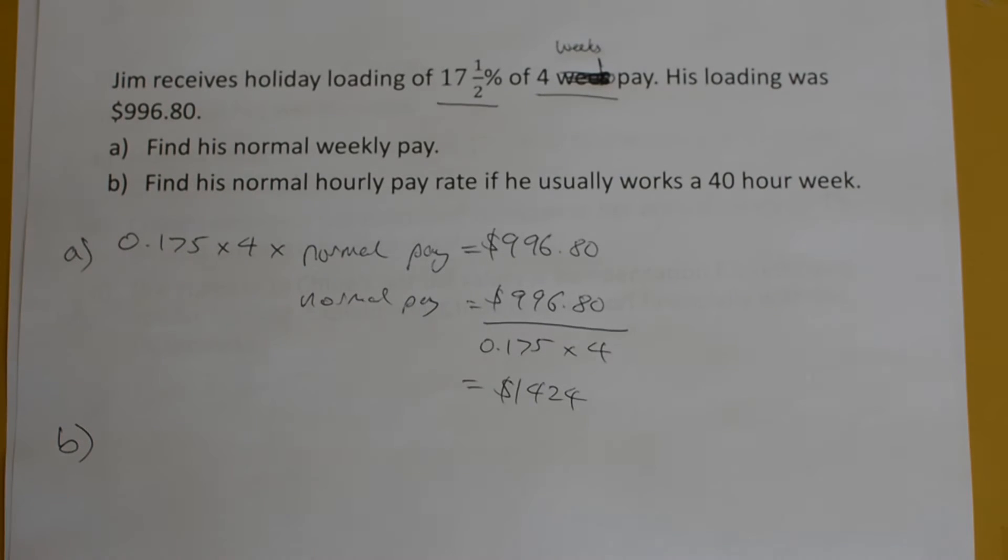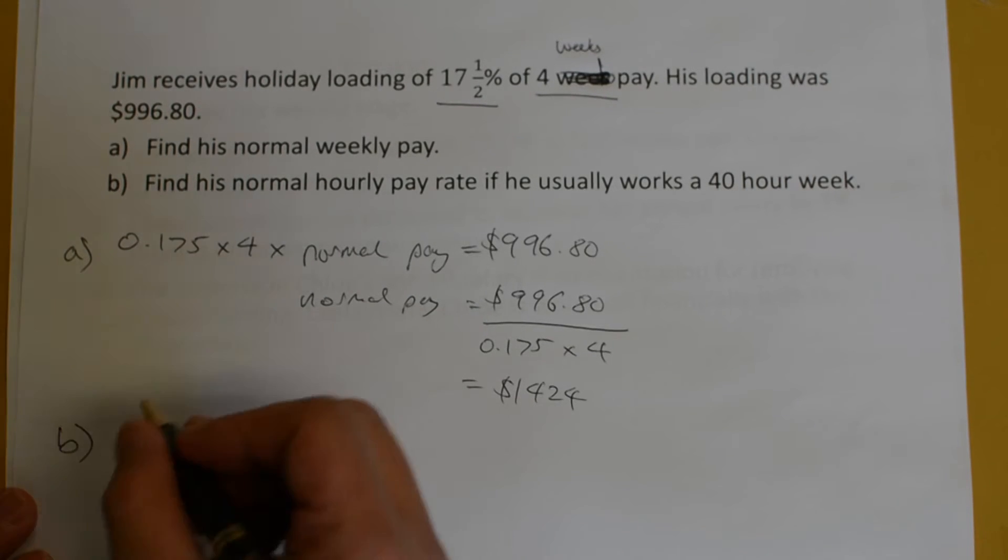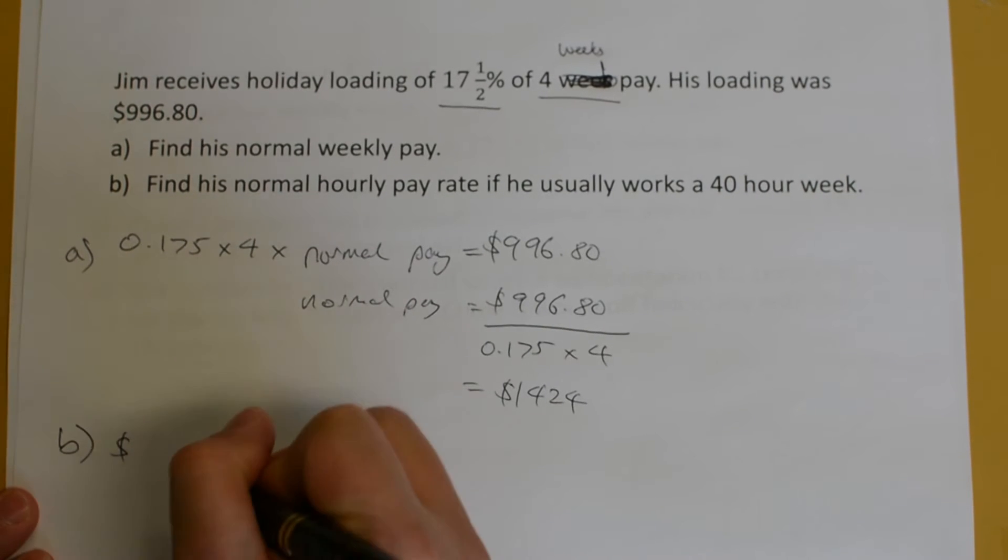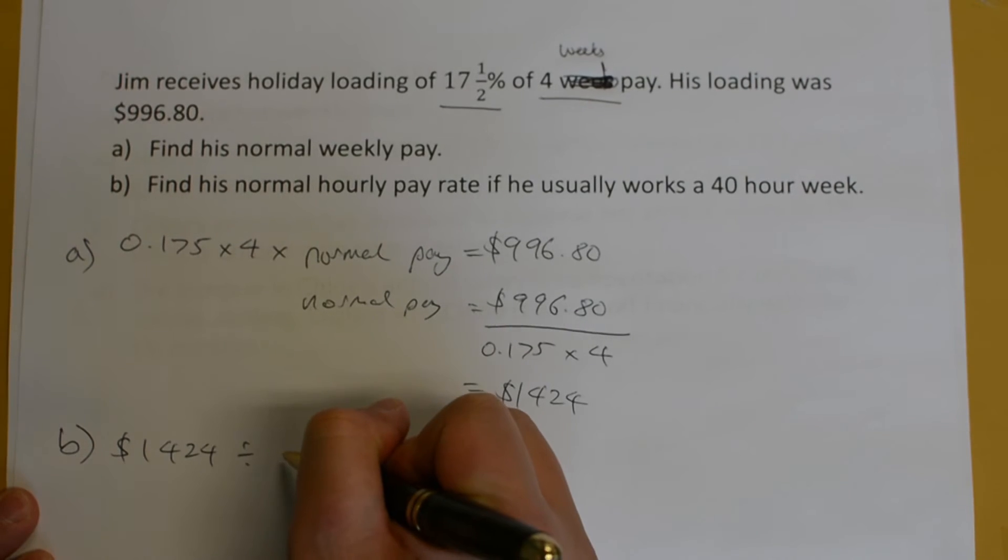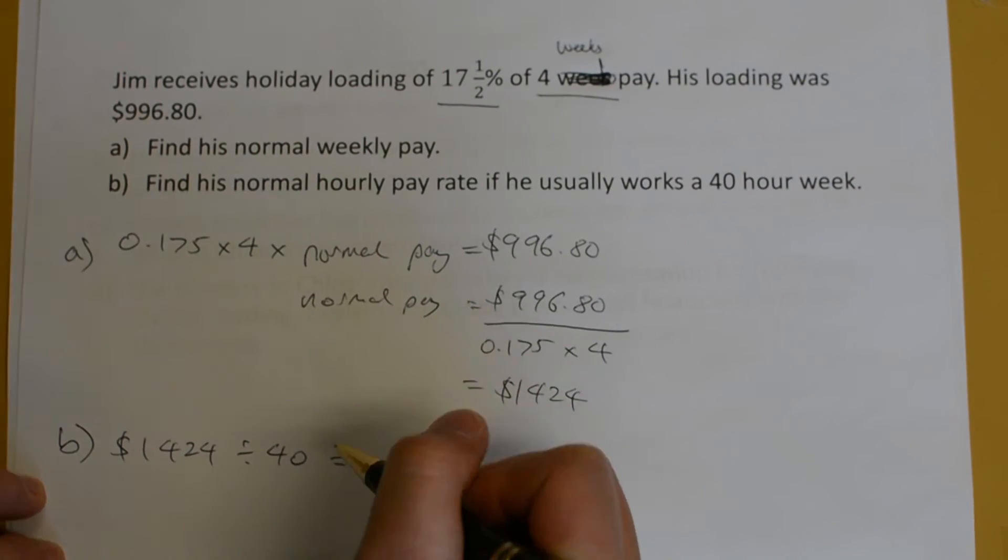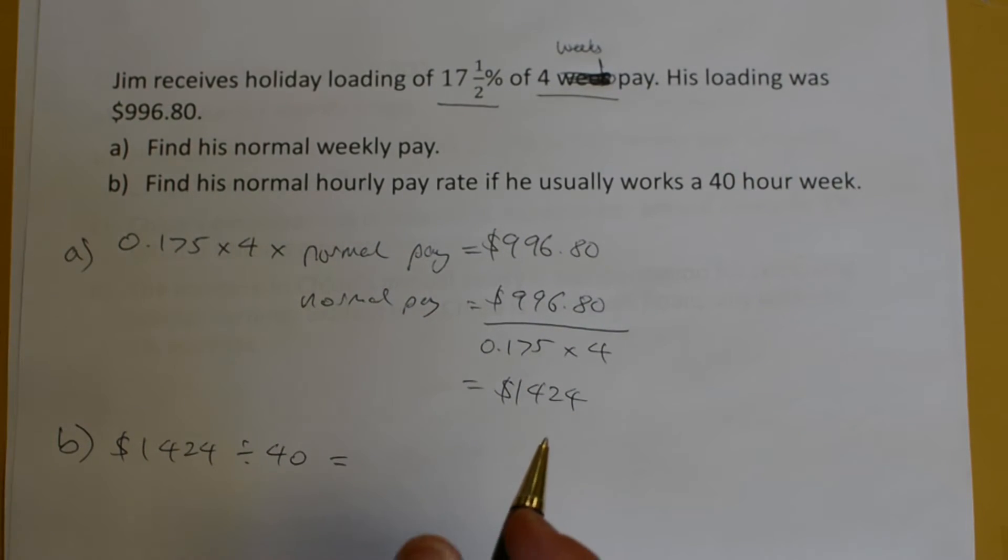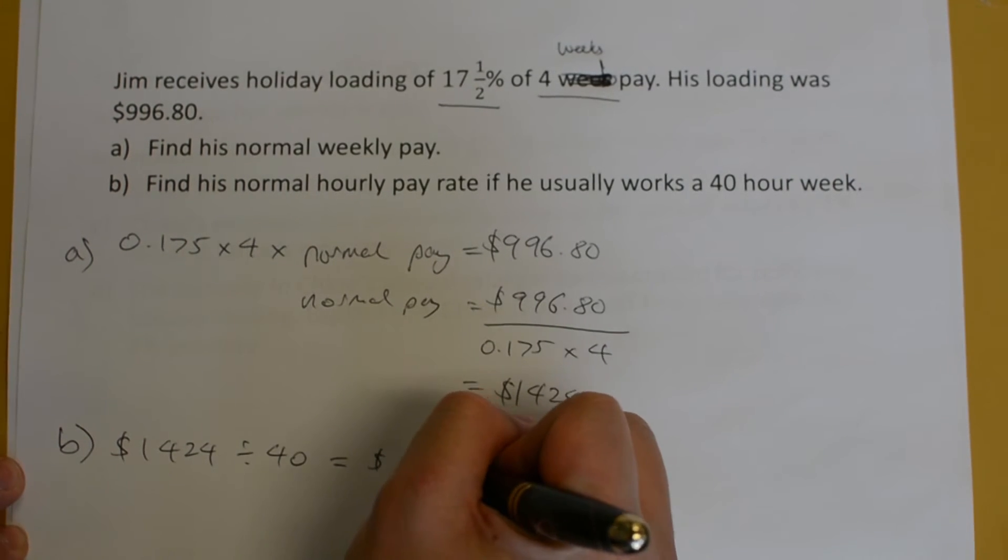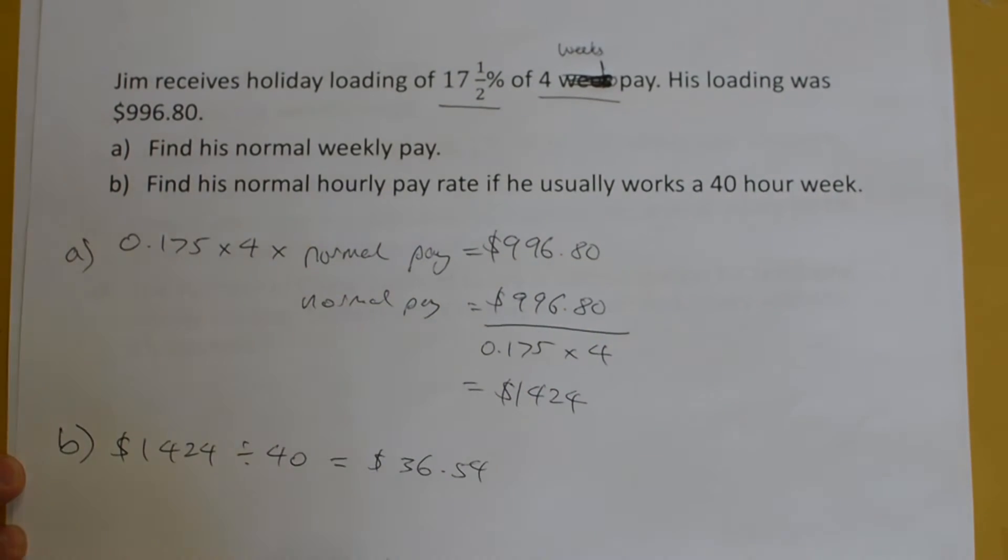Part B is asking to find his normal hourly pay rate if he usually works a 40-hour week. Well, if he earns $1,424 in a week and he works for 40 hours, we just simply divide by 40. Doing so will give you $36.54.